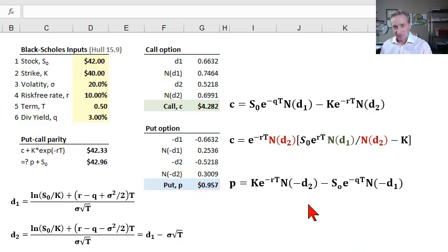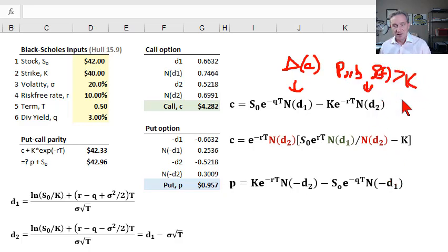But if nothing else, I would remember that N(d1) is the call option delta for a call, and N(d2) is the probability that the future stock price will be greater than the strike price.